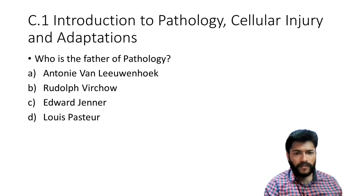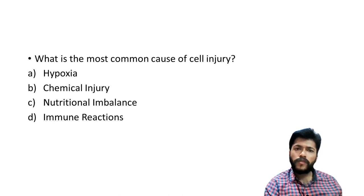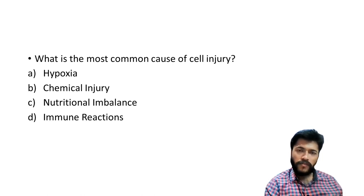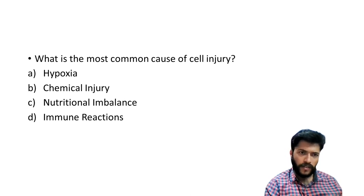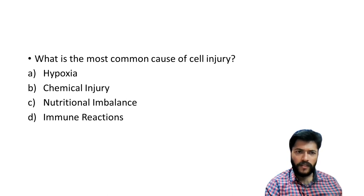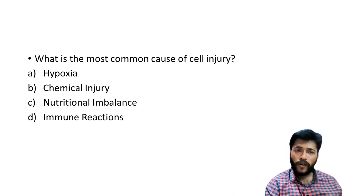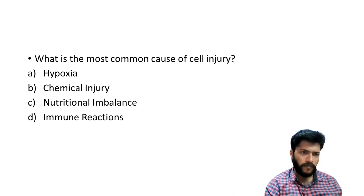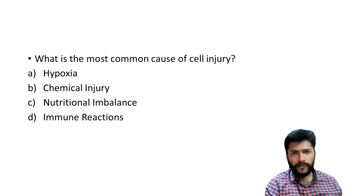The next question: what is the most common cause of cell injury? This is a favorite question — either in your vivas or in MCQ questions. The most common cause of any cellular injury is hypoxia, and the most common cause of hypoxia is ischemia, which is reduced blood supply. All the remaining options are also causes of cell injury, but the most common cause is hypoxia.